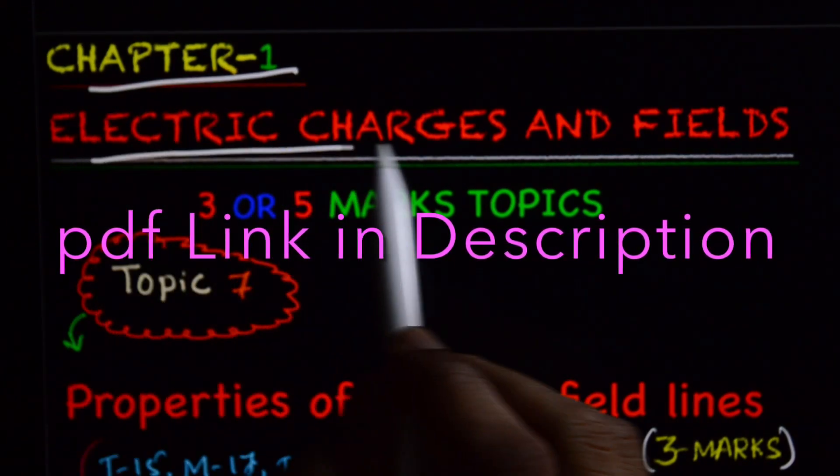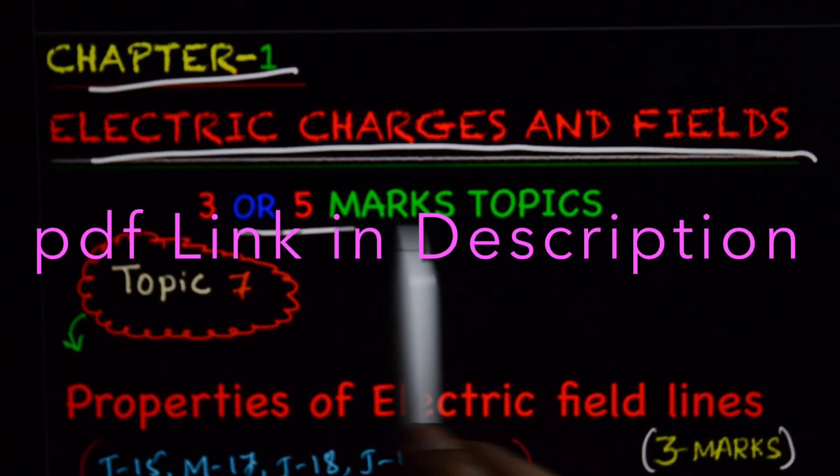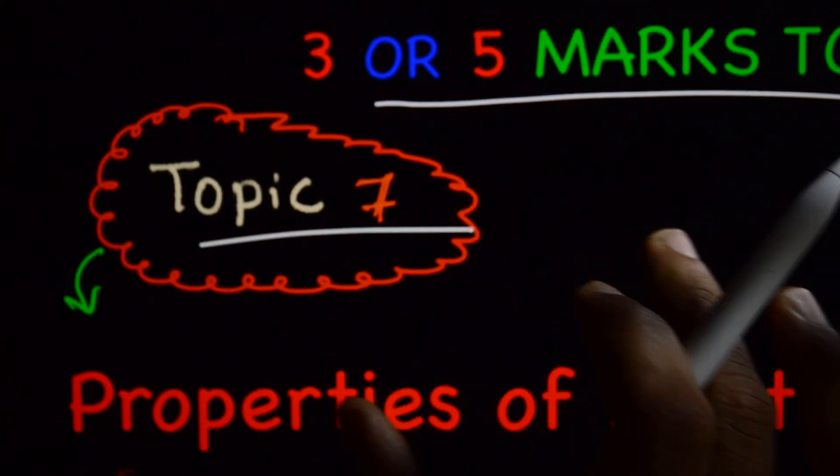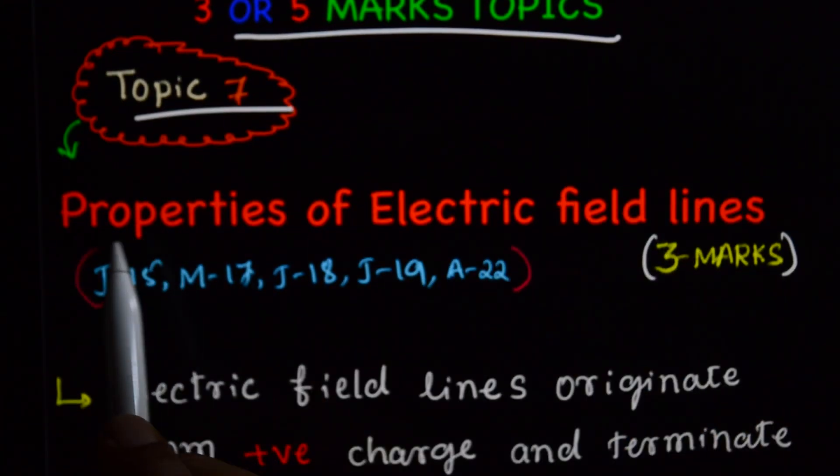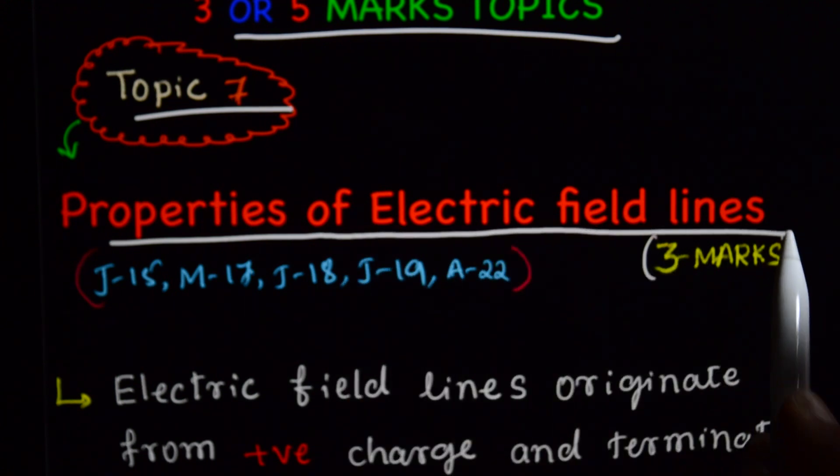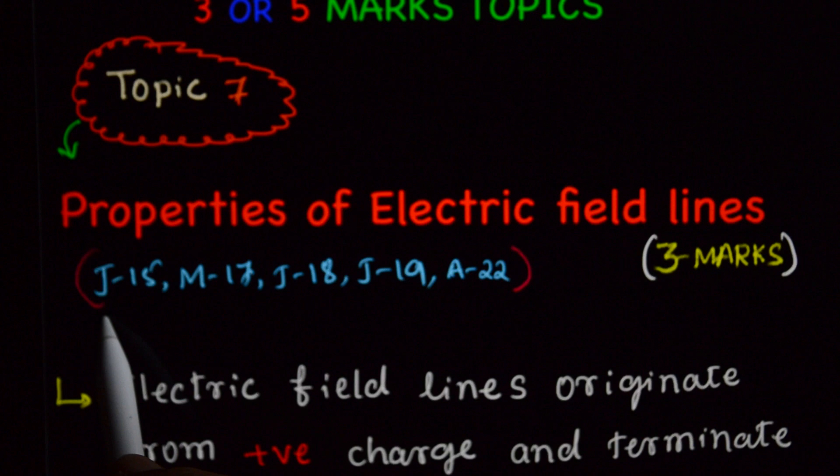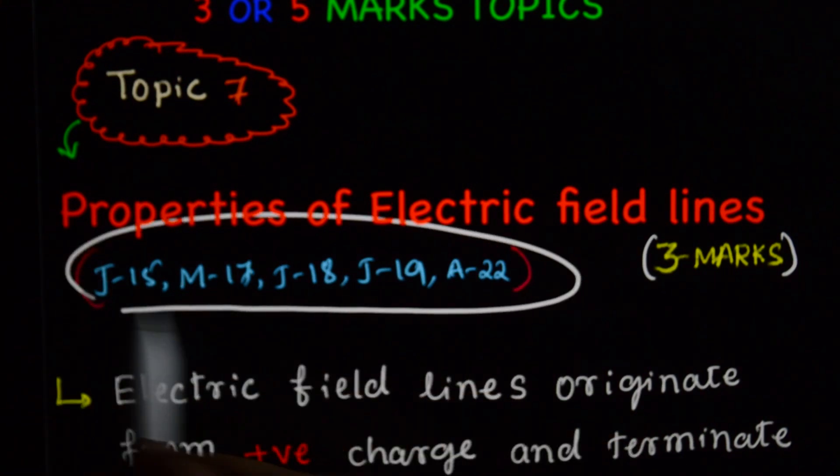Chapter 1, Electric Charges and Fields. 3 or 5 marks topics. And this is our 7th topic: Properties of Electric Field Lines. This is a 3 marks topic and this is a very important topic.